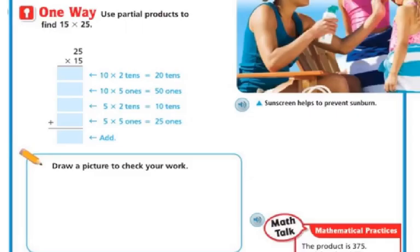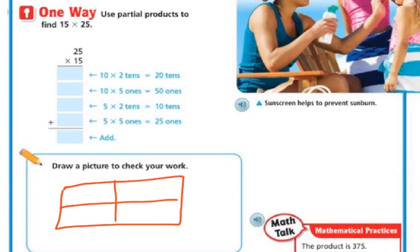So one way is we can use partial products. We've been doing this for a while now and we can break it apart. So I can take the 25, put my tens here which is 20, my ones here which is 5 because 20 plus 5 is 25. And then I can take my 15 and put my tens here and my ones there so 10 plus 5 is 15.